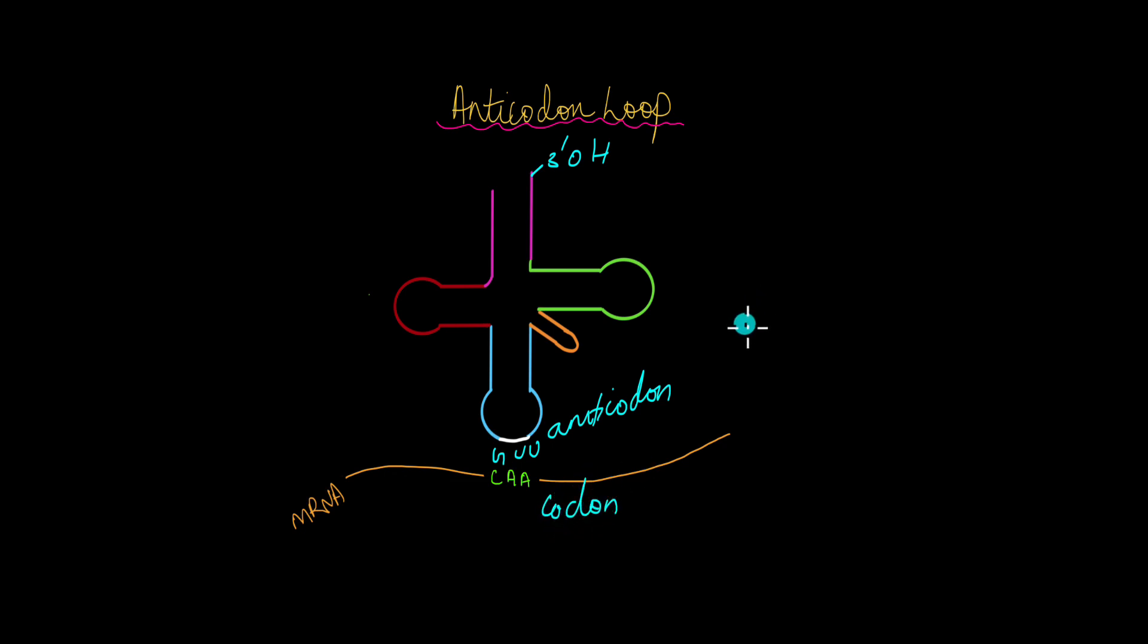For the codon on the mRNA, trust me, this is something that you can easily get confused with. Always remember that the amino acid depends on the codon of the mRNA and not the anticodon of the tRNA. So this tRNA right here would have the amino acid glutamine that is GLN as opposed to having valine. You see that CAA actually codes for glutamine whereas GUU codes for valine. Because the amino acid is determined by the codon of the mRNA and not the anticodon of the tRNA, this tRNA would have glutamine, GLN attached to it.